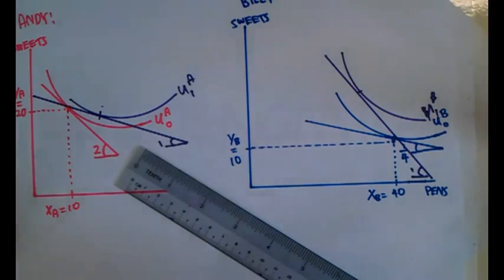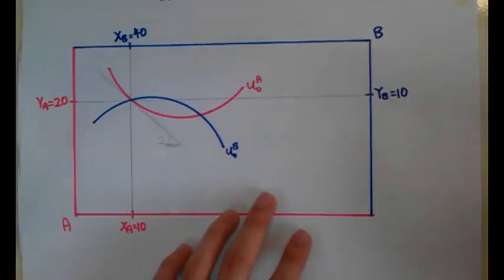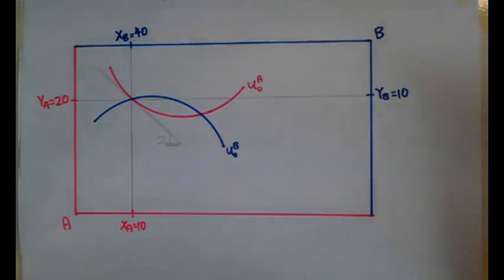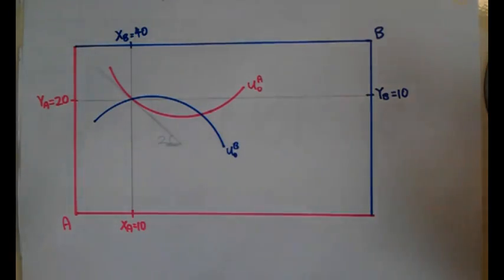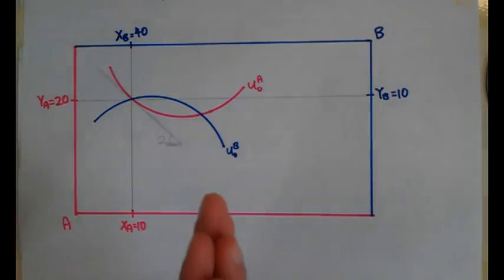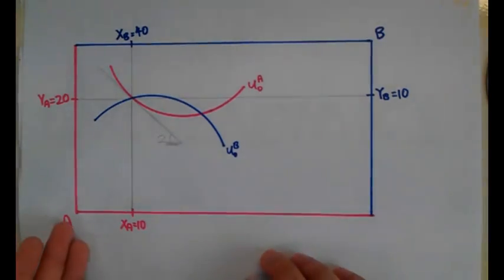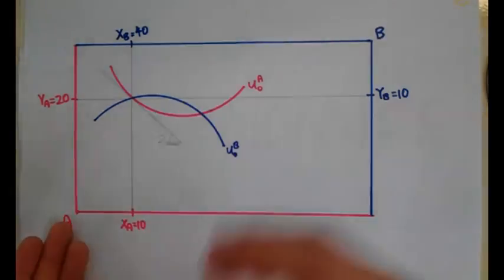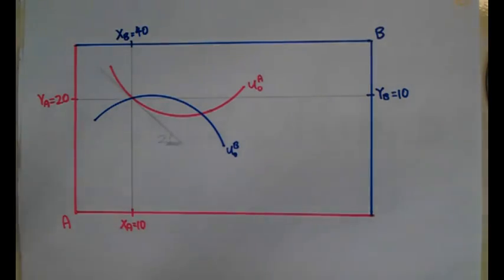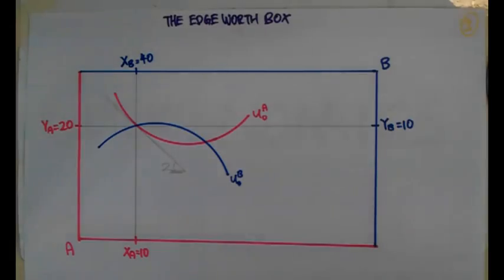But how do we know what is the correct price to trade? By using the actual box, we look at Pareto efficiency. What is Pareto efficiency? It is the point where one individual cannot be better off without making another individual worse off — Andy cannot be better off without making Bill worse off. Take a look at the write-up on the blog post so that you will understand more about Pareto efficiency.